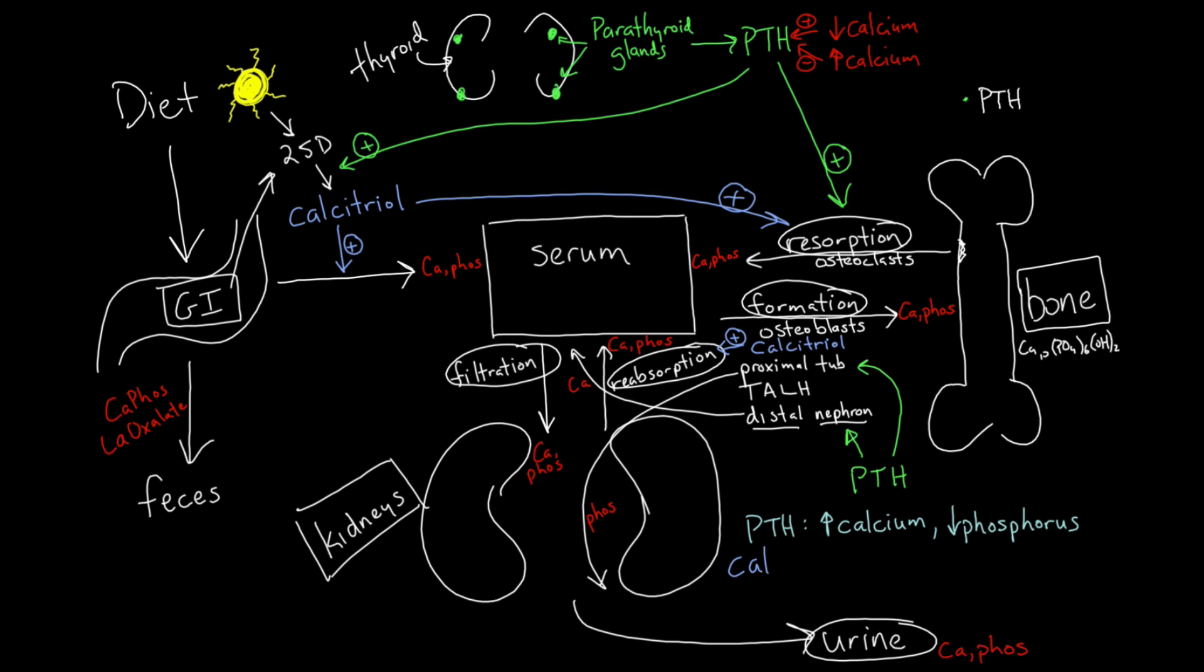Now calcitriol, on the other hand, works to increase serum calcium and phosphorus, mainly through GI absorption, but also acting through bone resorption and renal reabsorption. Think now for a moment about a patient who is taking excessive calcitriol, or vitamin D, or who has a disease that is producing too much calcitriol. What would the serum and urine calcium and phosphorus look like in this patient?